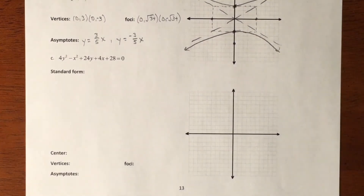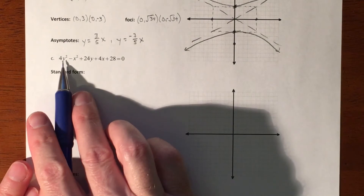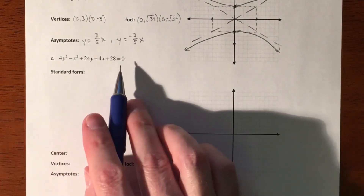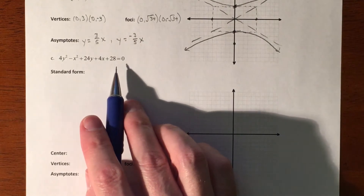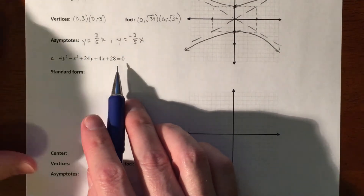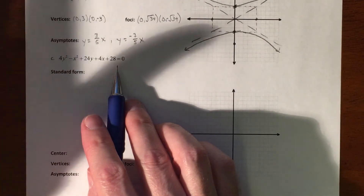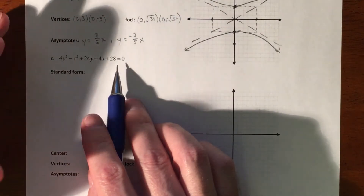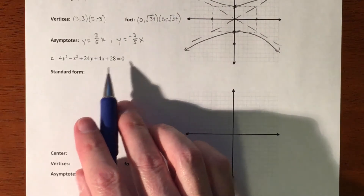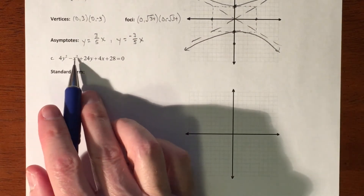In this video we are going to take this conic equation and try to graph it. One of the first things I want to do is recognize what kind of equation we have, because it's either going to be a circle, a parabola, an ellipse, or a hyperbola. The first thing I recognize is I have squares on two different variables.